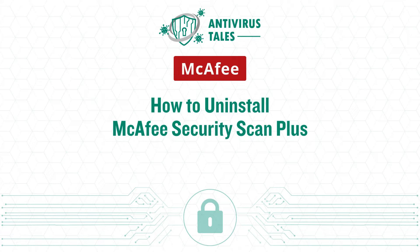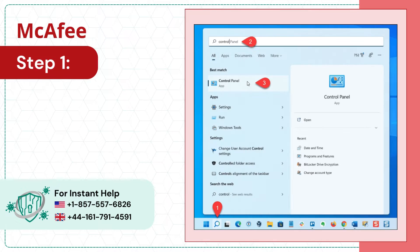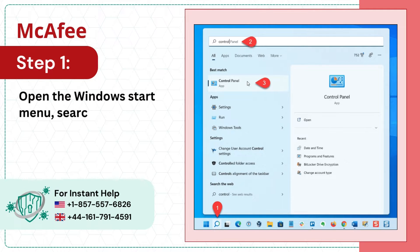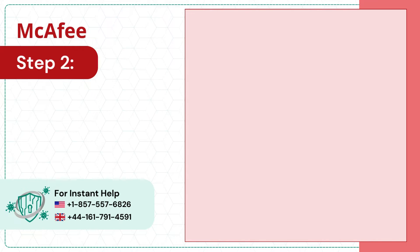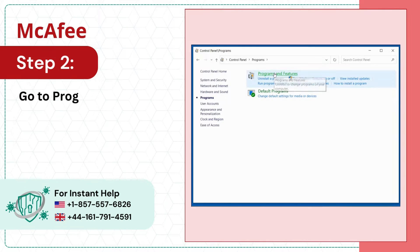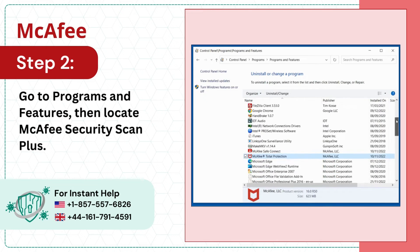How to Uninstall McAfee Security Scan Plus. Step 1: Open the Windows Start Menu, search Control Panel and open it. Step 2: Go to Programs and Features, then locate McAfee Security Scan Plus.